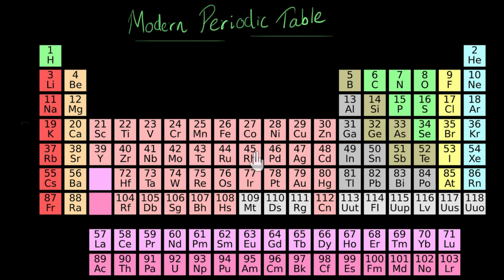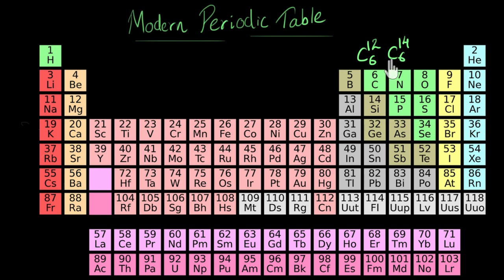Next, the position of isotopes was resolved. Isotopes are atoms of the same element but with different atomic masses — for example, carbon-12 and carbon-14. Under the old periodic law they would be placed in separate positions because of different masses. But since we now arrange elements based on atomic number, and both isotopes have the same atomic number, they both occupy the same place in the periodic table.